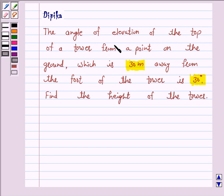The angle of elevation of the top of a tower from a point on the ground which is 30 meters away from the foot of the tower is 30 degrees. Find the height of the tower.